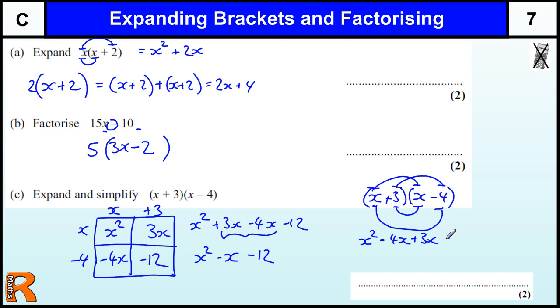So the first, the outer, the inner, and then the last two. And that just reminds us there's four parts again. And we still get the same answer, x squared minus x minus 12.